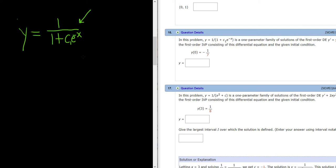We have to find a specific one that satisfies this condition: y of 0 equals negative 1/7. We have to pick one from this infinite family of solutions. The answer we get is called a particular solution because we're picking a particular one from this infinite family.